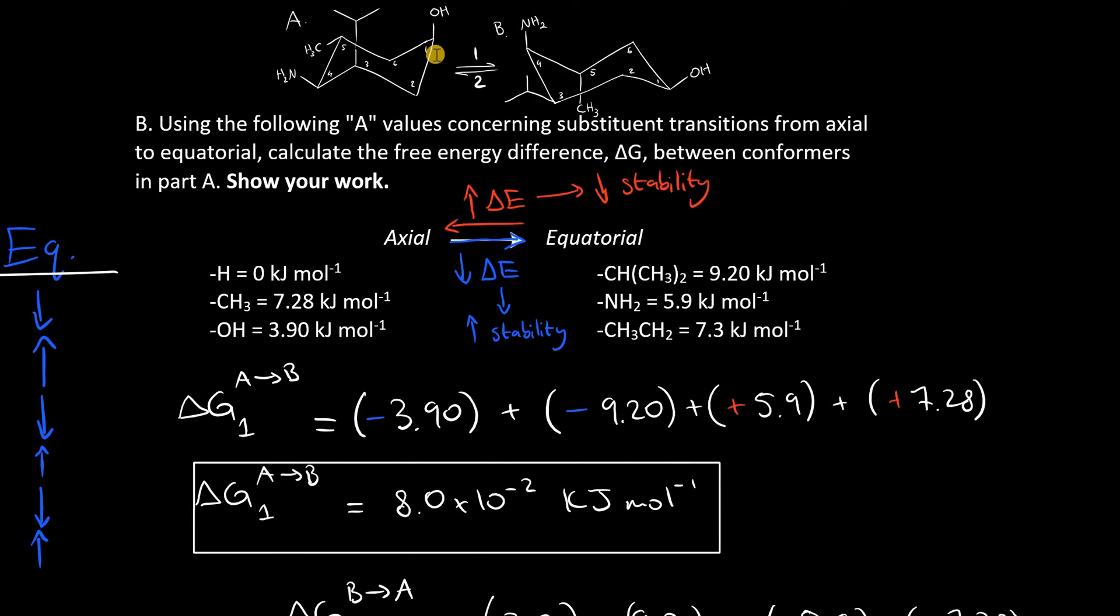So for that reason, going from B to A happens to be more stable in this case. So the more stable conformer would be A.